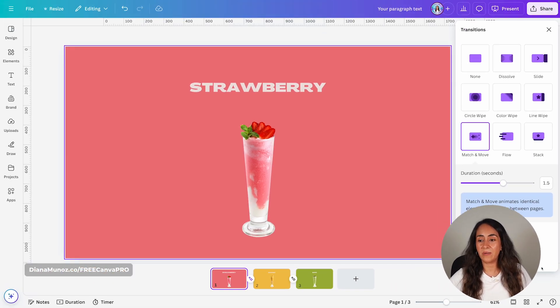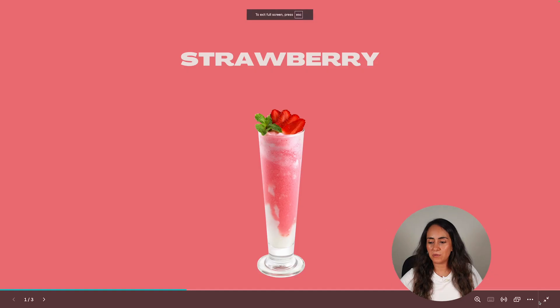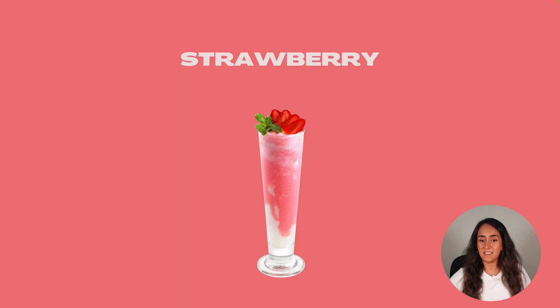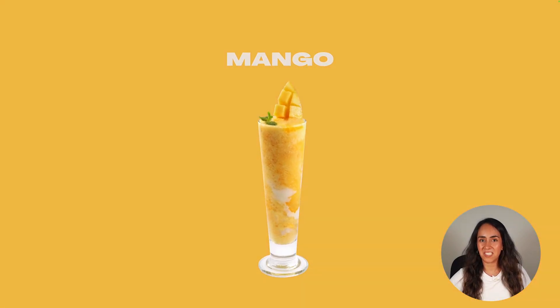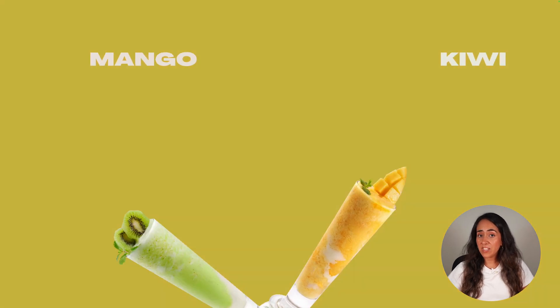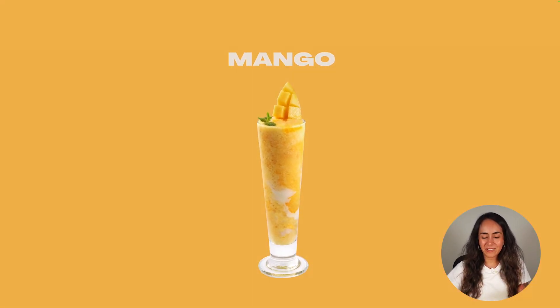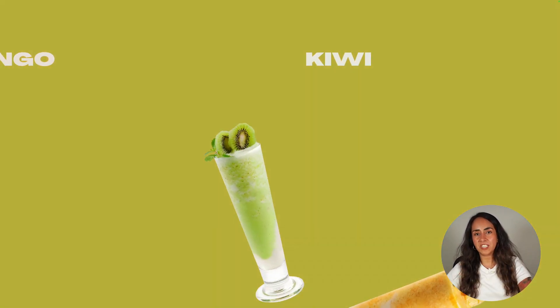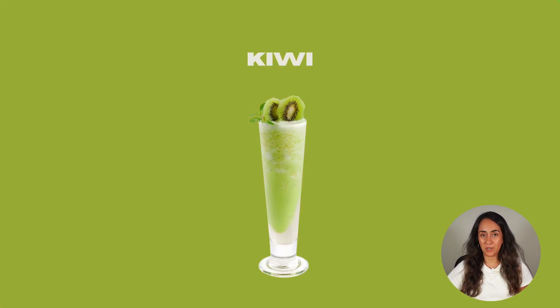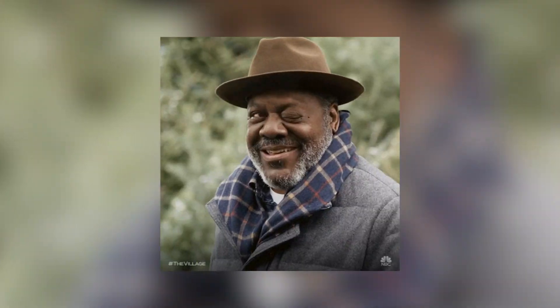Now let me show you how this animation looks. Let's go to full screen. This is how the presentation looks. What I love about this animation is that you can see the title moving to the left while the images are rotating to the right, and the color in the background changes as well.